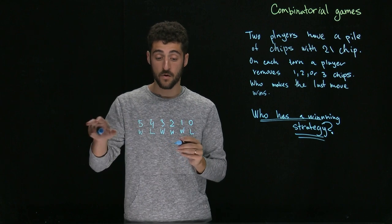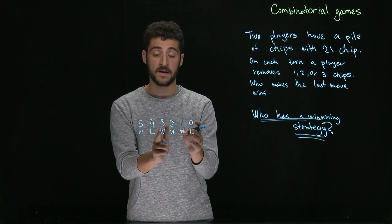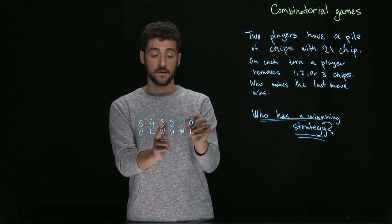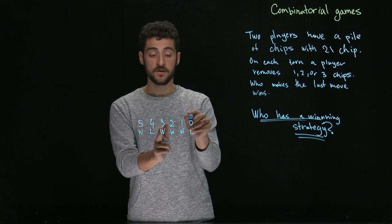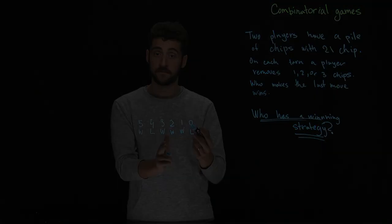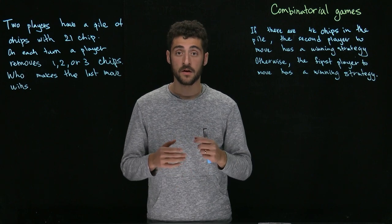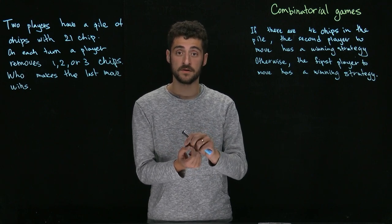And so on. Now we can see a pattern. If the number is divisible by four it's a losing position, otherwise it's a winning position.